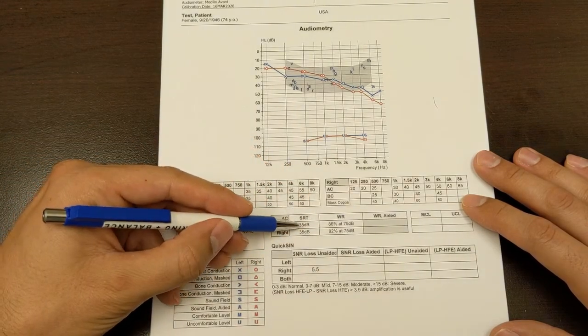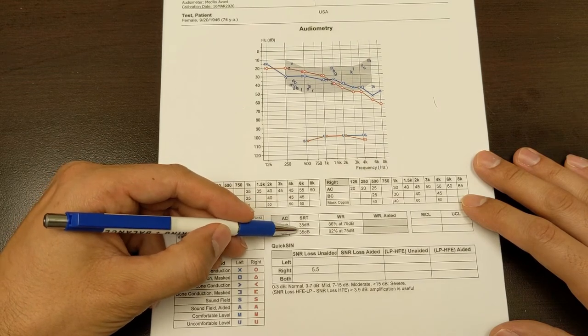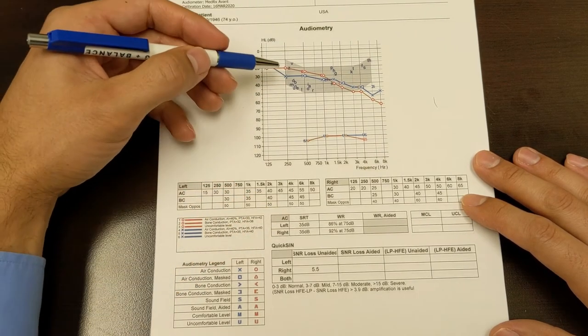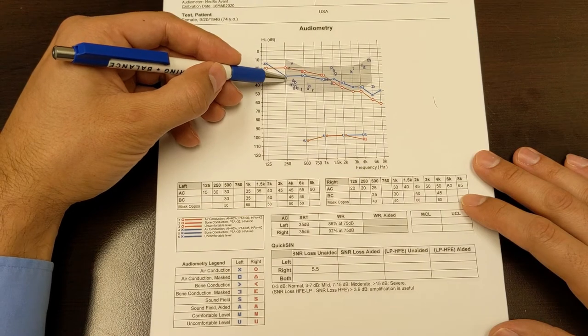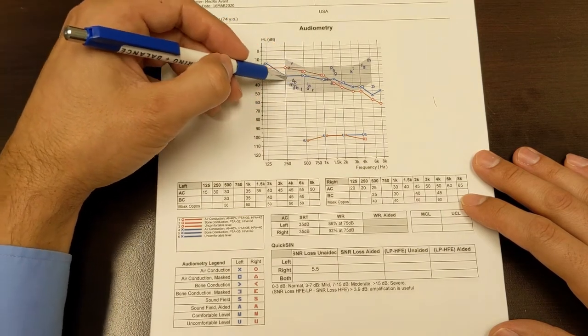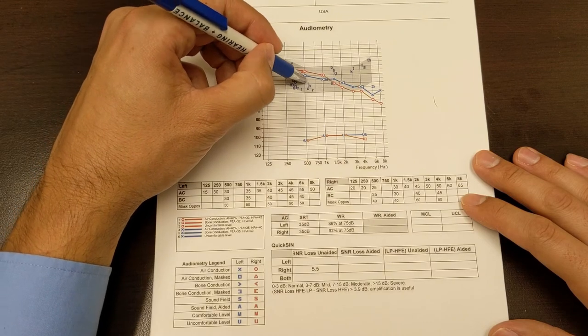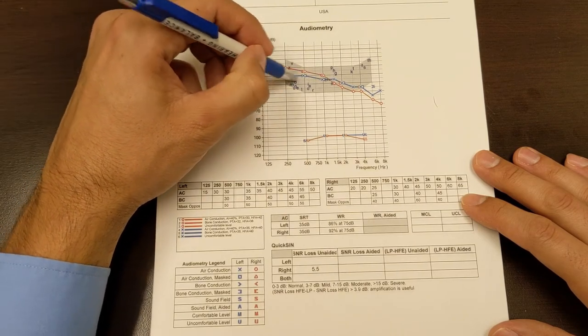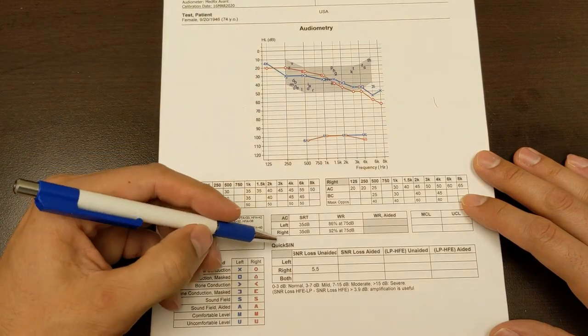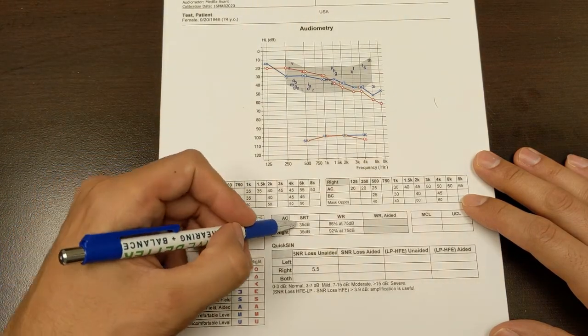So your speech reception threshold, your ability to make out words should be about the same as the volume it takes to stimulate these low frequencies, 250, 500, and 1,000. So the average of those frequencies should be about what it takes for you to make out a word.